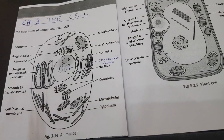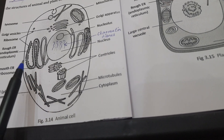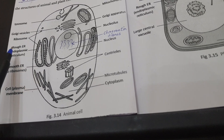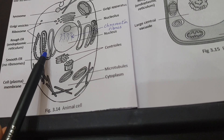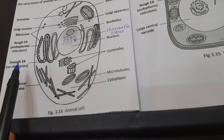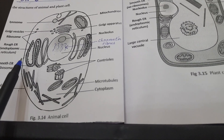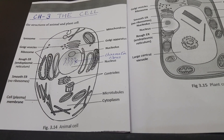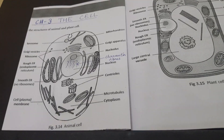Tiny structures on the endoplasmic reticulum are called ribosomes. If ribosomes are present on the surface of the endoplasmic reticulum, then it is called rough endoplasmic reticulum. If ribosomes are not present on the surface, it is called smooth endoplasmic reticulum. The function of the endoplasmic reticulum is that it serves as a pathway for the distribution of materials within a cell and between two cells, and it also provides internal support to the cell.